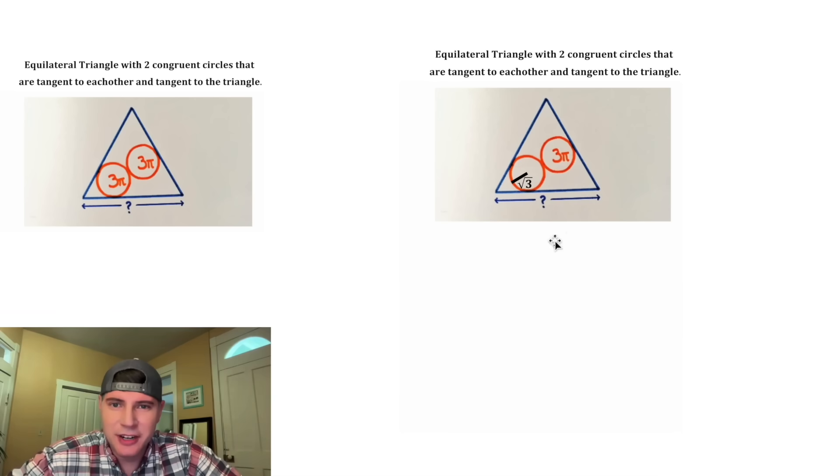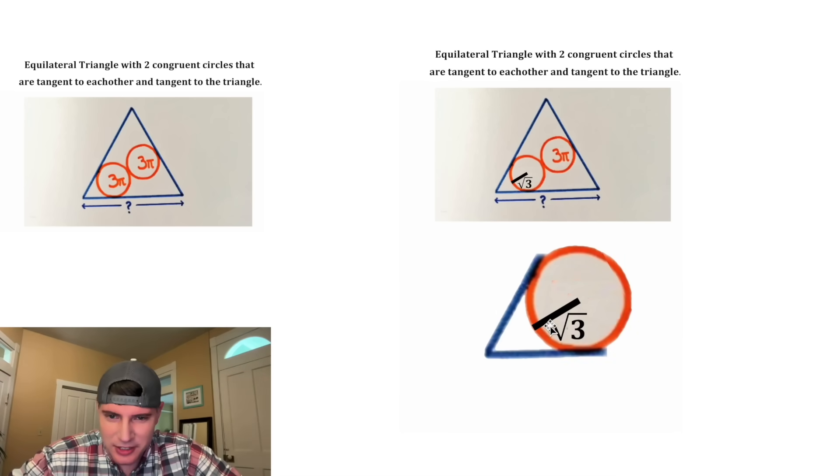Next, let's zoom in on this region right here. Let's extend the radius to here and let's draw this radius to intersect this tangent line. Since it's a radius, it is also square root of 3. And then a radius will always meet a tangent line at right angles. So this ends up being a right triangle.